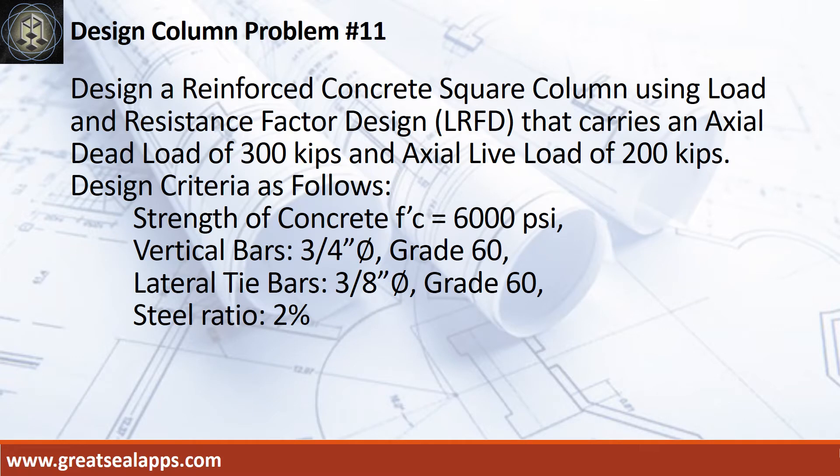Design a reinforced concrete square column using load and resistance factor design that carries an actual dead load of 300 kips and actual live load of 200 kips. Design criteria as follows: strength of concrete, 6000 psi; vertical bars, 3/4 inch diameter, grade 60.